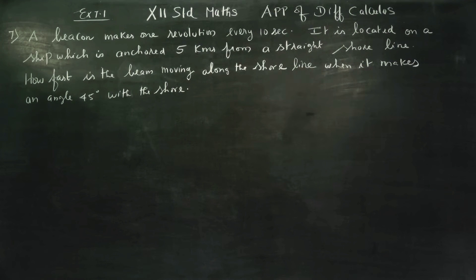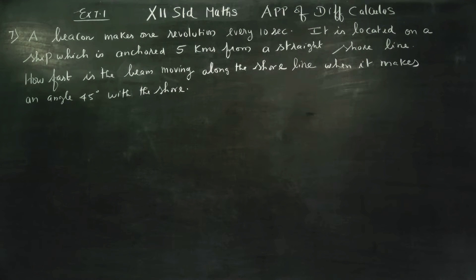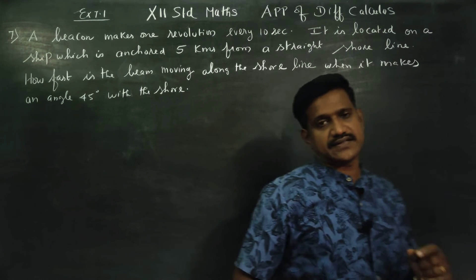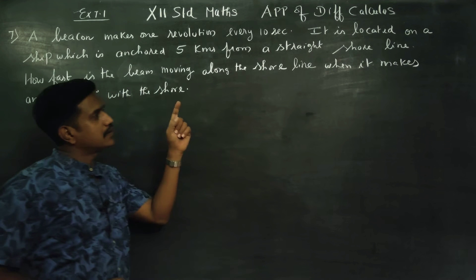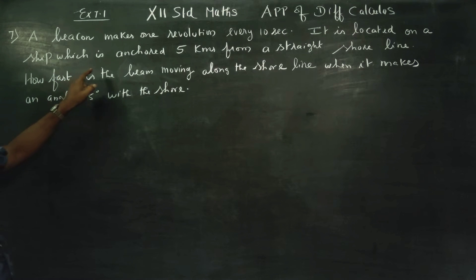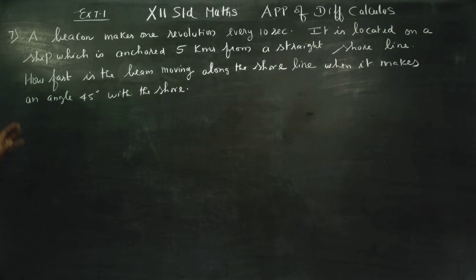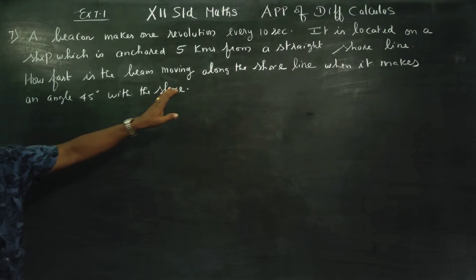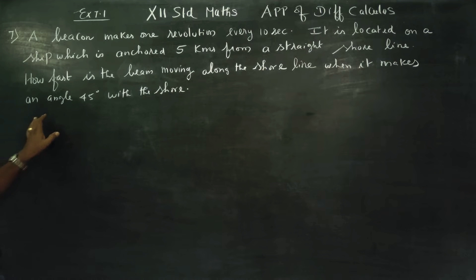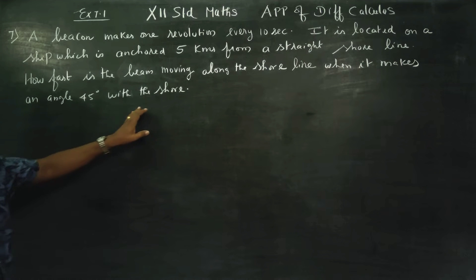Hello 12 standard students, myself Karna Garan. In exercise number 7.1, applications of differential calculus: a beacon makes one revolution every 10 seconds. It is located on a ship which is anchored 5 kilometers from a straight line shore. How fast is the beam moving along the shoreline when it makes an angle of 45 degrees with the shore?